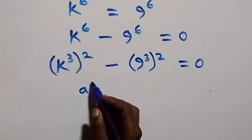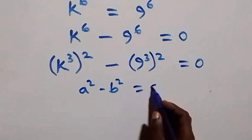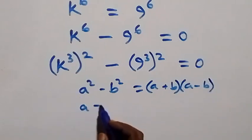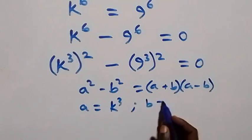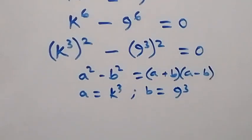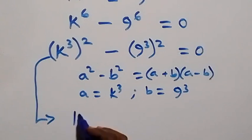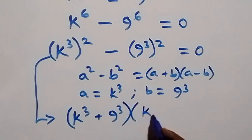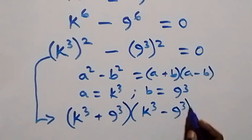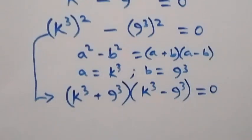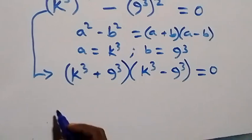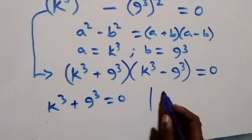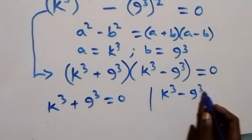This follows from the identity a squared minus b squared, which is equal to (a + b)(a - b). Here, a is the same as k raised to power 3, and b is the same as 9 raised to power 3. So what we have becomes (k raised to power 3 plus 9 raised to power 3) times (k raised to power 3 minus 9 raised to power 3), which equals 0. This implies we have two cases: k raised to power 3 plus 9 raised to power 3 equals 0, or k raised to power 3 minus 9 raised to power 3 equals 0.